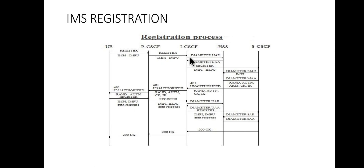To find the S-CSCF address, the I-CSCF will query the HSS by sending a Diameter message called UAR — User Authorization Request. The HSS responds with UAA — User Authorization Answer — which includes the S-CSCF address as well as its capabilities.